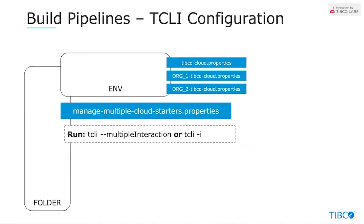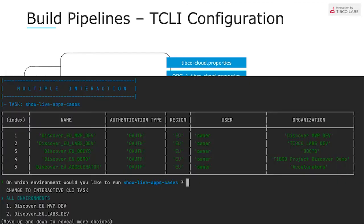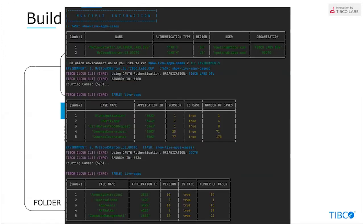In the main folder, you can run TCLI multiple interaction — or just TCLI -I. You get into a menu where you see all the individual environments and can run actions on them. You can choose a task and run it on one specific environment or on all environments. For example, you can show what live app cases exist across multiple environments, or monitor a TCLI app in a specific environment, or compare TCLI apps from various environments.